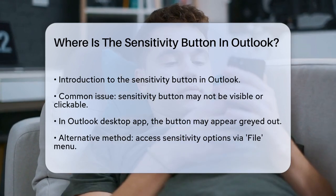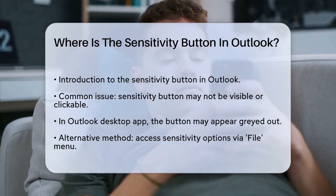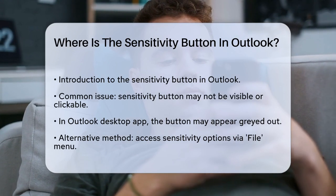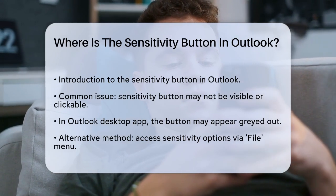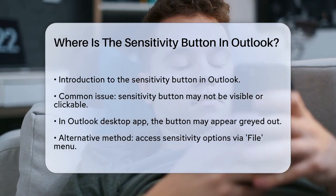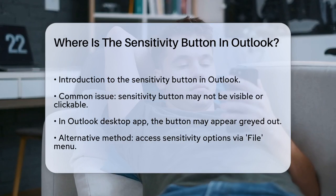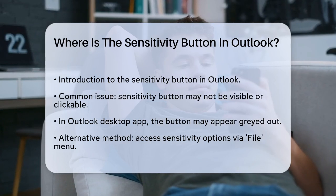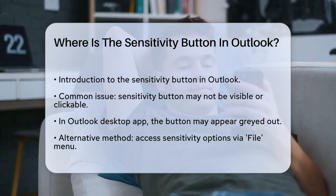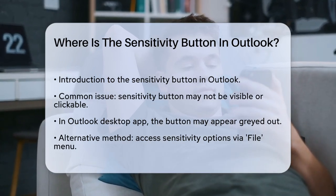First, the sensitivity button is not always visible or clickable, and this can be confusing. In the Outlook desktop app, you might notice that the sensitivity button is grayed out, making it impossible to select any sensitivity options directly from the button.